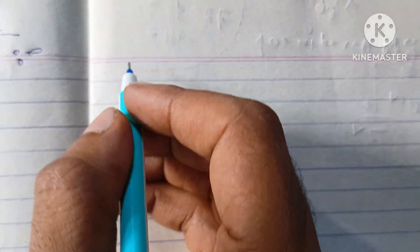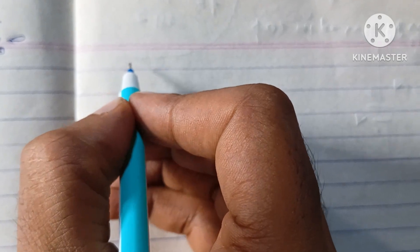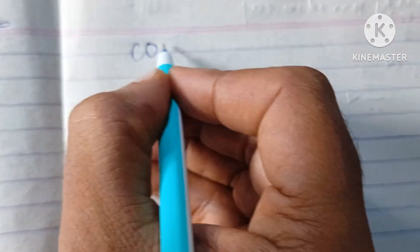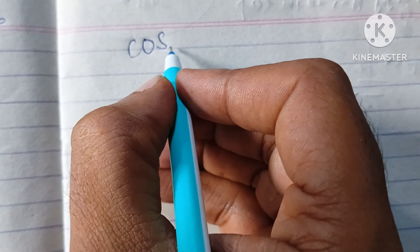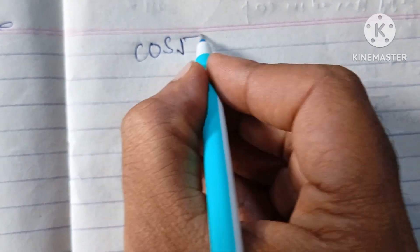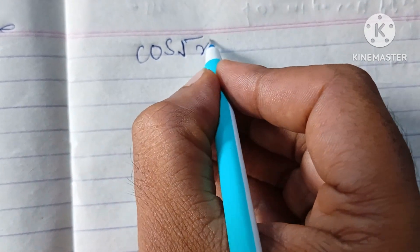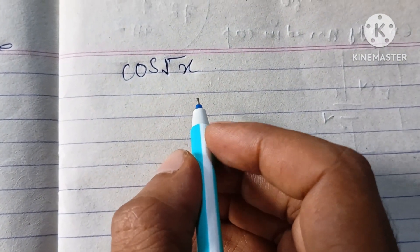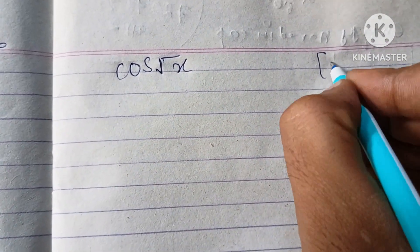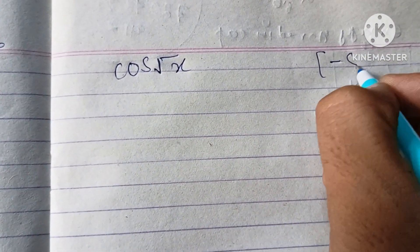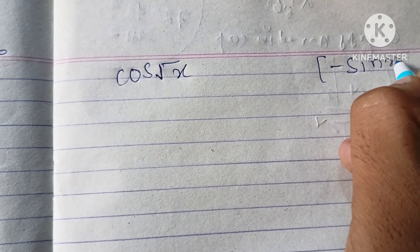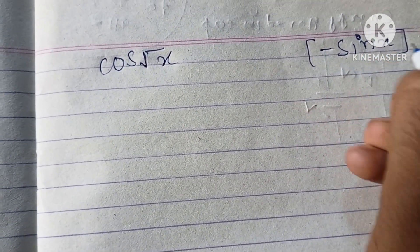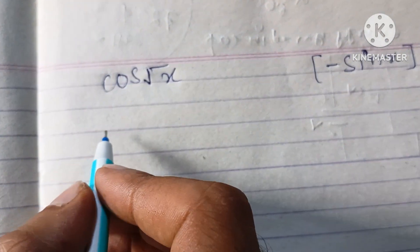Now we will see another question. For example, we have cos(root x). We know the differentiation of cos x is minus sin x. Here for students it is the same concept.